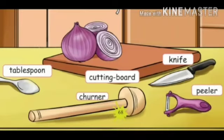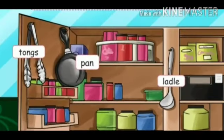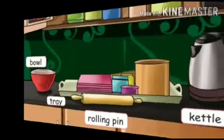Churner — churner is used to churn curd into buttermilk. Peeler — peeler is used to peel the outer layer of the vegetables. Tongs — tongs is used to take hard cooked food like chapati. Pan — pan is used to fry. Ladle — ladle is used to serve.